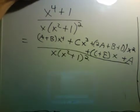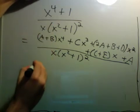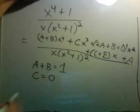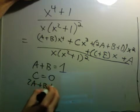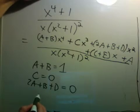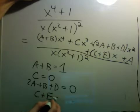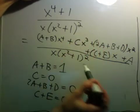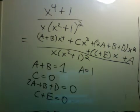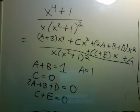So in order for this to be true, we need A plus B to equal 1. We need C to equal 0. We need 2A plus B plus D to equal 0. I'm just matching up coefficients like before. And I need C plus E to equal 0. And finally I need A to equal 1.